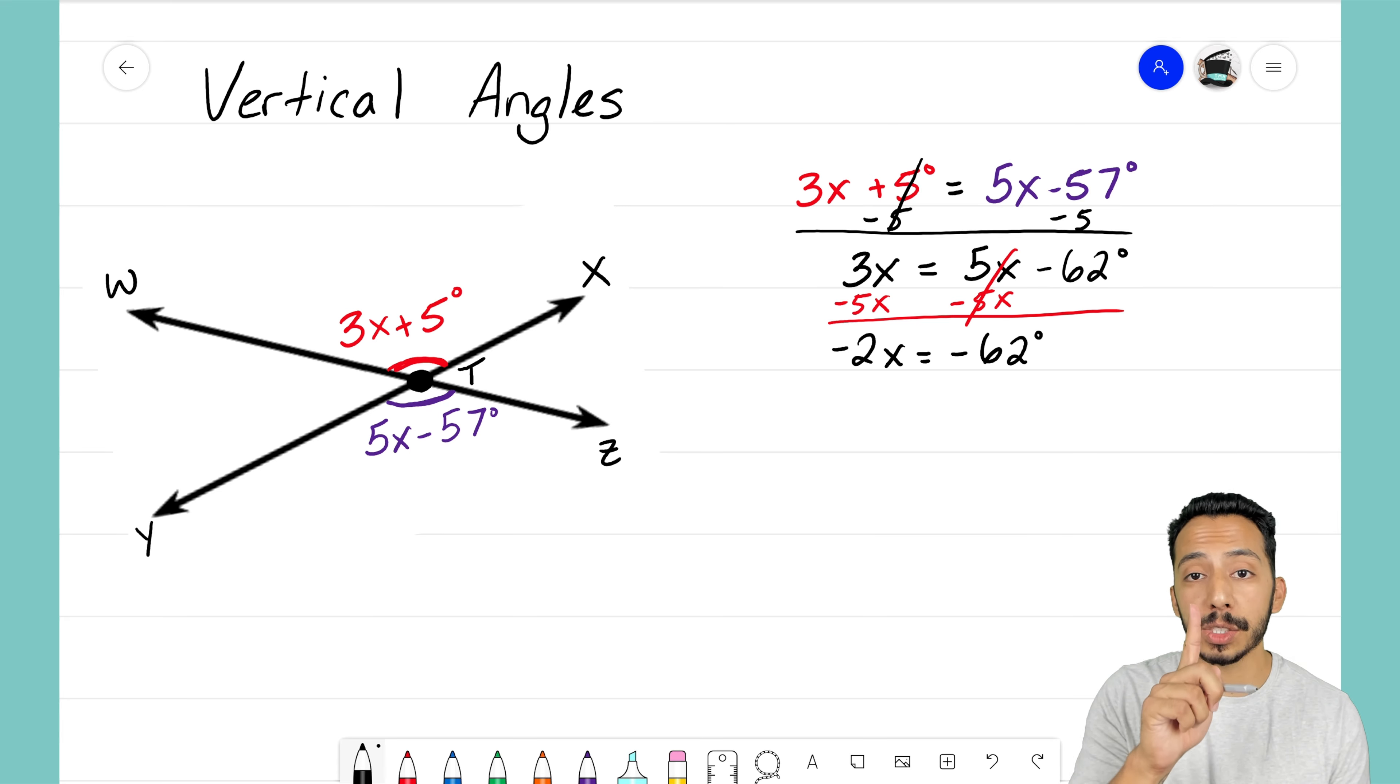So to do this final step I just need to divide both sides by that coefficient of negative 2. Doing so will make those cancel on the left into a 1, so I'm just left with x equals negative 62 divided by negative 2.